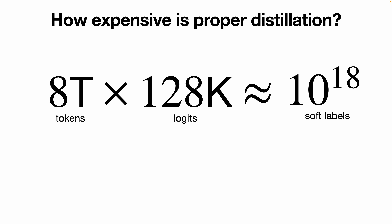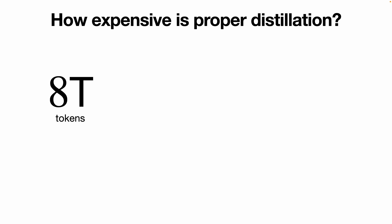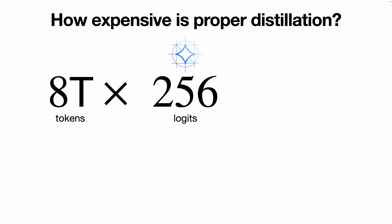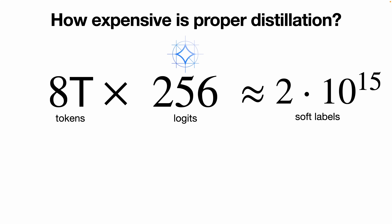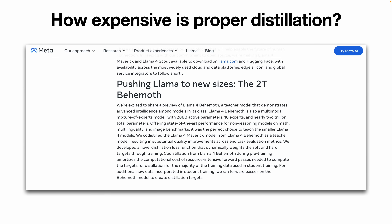If we stored all of them in 16-bit floating point, we would need as much storage as the entire contents of YouTube — well, at least according to ChatGPT. That's way too much for a single distillation run, even for Google. So in practice, models like Gemma don't use the full distribution. Instead, Gemma sampled 256 tokens from the teacher's probability distribution, and any soft labels other than those 256 were zeroed out. That still leaves us with around 10 to the power of 15 values, which is more manageable but still massive. So it's likely these soft labels are computed on the fly and then immediately discarded. Either way, running 8 trillion teacher inferences is not for the faint of heart. In fact, Llama 4 hints at this issue in their blog post — they use the term co-distillation to help amortize the cost of all those expensive forward passes through the teacher.